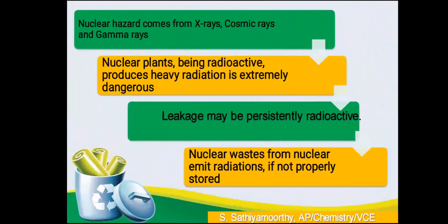The nuclear hazards are mainly coming from x-rays, cosmic rays produced in space, and gamma rays. We all know that nuclear power plants are loaded with nuclear fuels like uranium, thorium and plutonium. They are highly radioactive and extremely dangerous. If the nuclear power plant containers are having leakage, they persistently emit radioactive radiations, and the nuclear waste generated emits strong radiations if not properly stored.